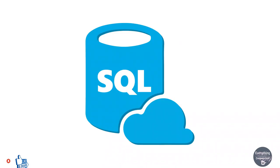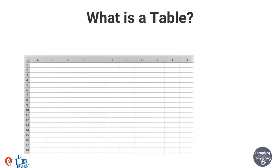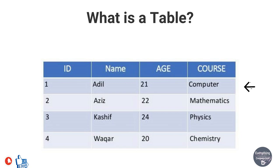So let's start with the tutorial. To understand SQL, we first need to understand some basic concepts. A table is a collection of related data in an organized manner in the form of rows and columns. Here is a simple example of a table containing data about different students — their ID, name, age, and course. Each type of information present in the vertical position is known as a column or field.